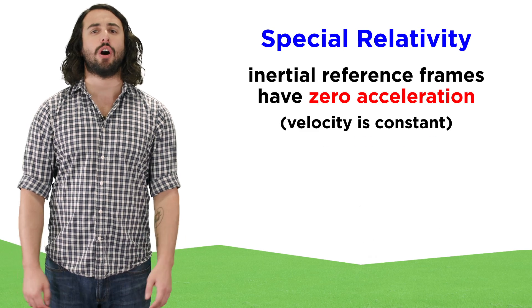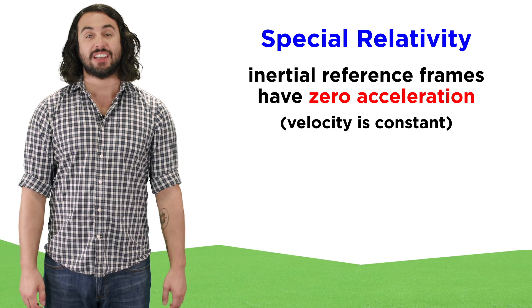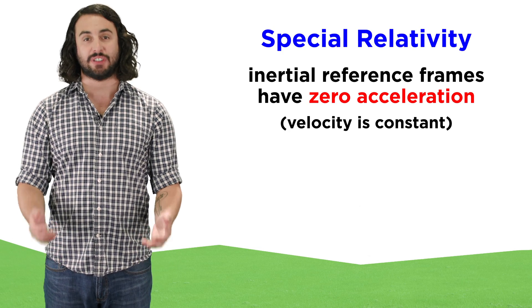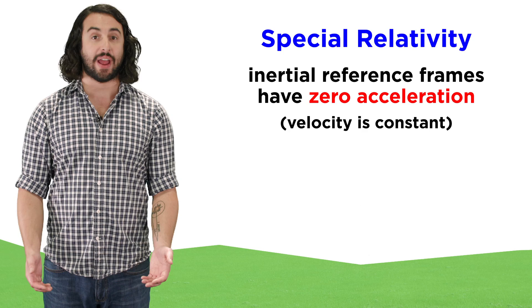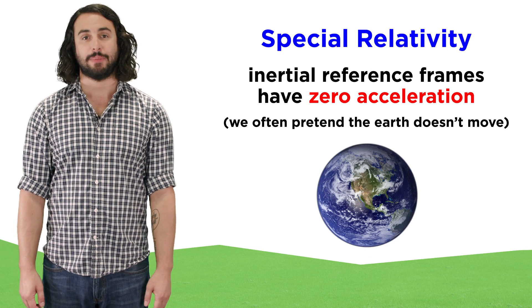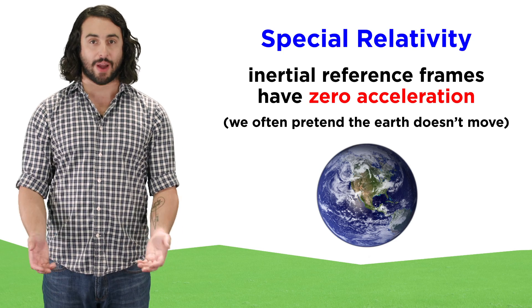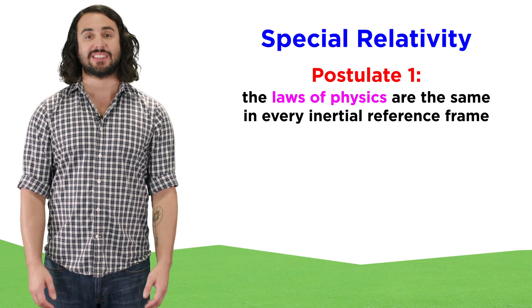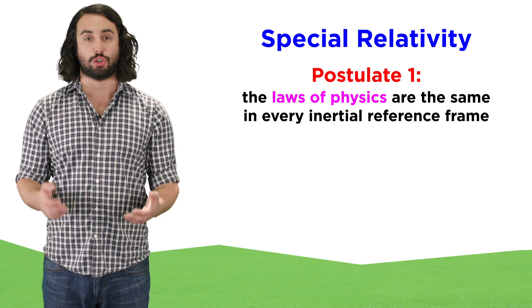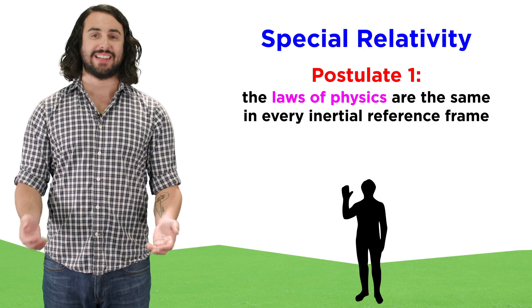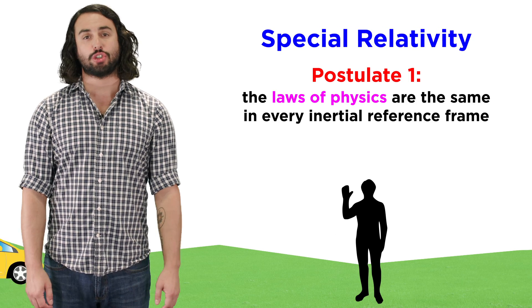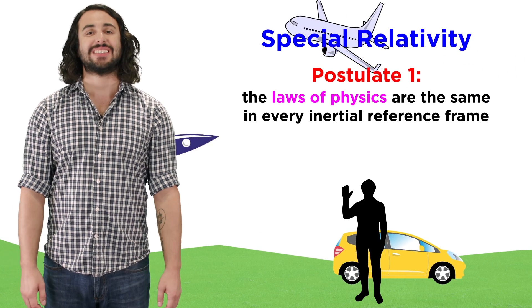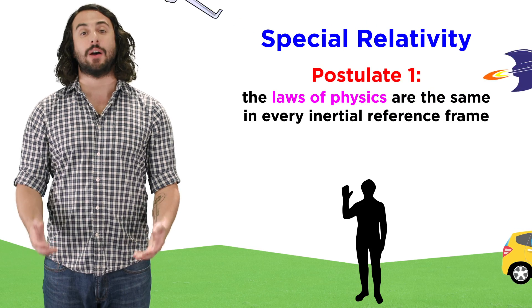First let's recall that an inertial reference frame is one where no acceleration is taking place. It must have some constant velocity, including zero if at rest, and we typically approximate the earth as an inertial reference frame. The first postulate states that the laws of physics are the same in every inertial reference frame. Whether you are standing still on earth, or traveling with constant velocity in a car, or plane, or spaceship, the same laws of physics always apply.